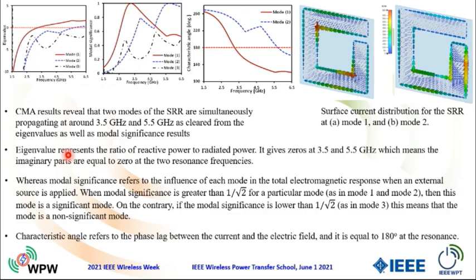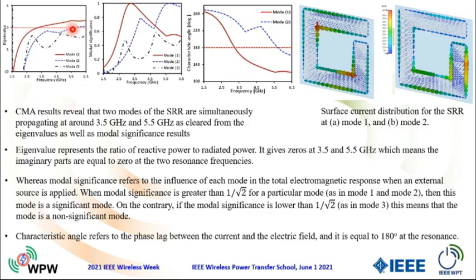The characteristic mode analysis results reveal that two modes of the split-ring resonator are simultaneously propagating at around 3.5 GHz and 5 GHz, as cleared from the eigenvalues results. The eigenvalue represents the ratio of reactive power to radiated power, so it gives zero at the operating frequencies — around 3.5 GHz it gives zero, and at 5 GHz it gives zero. This means the imaginary parts are equal to zero at the operating modes.